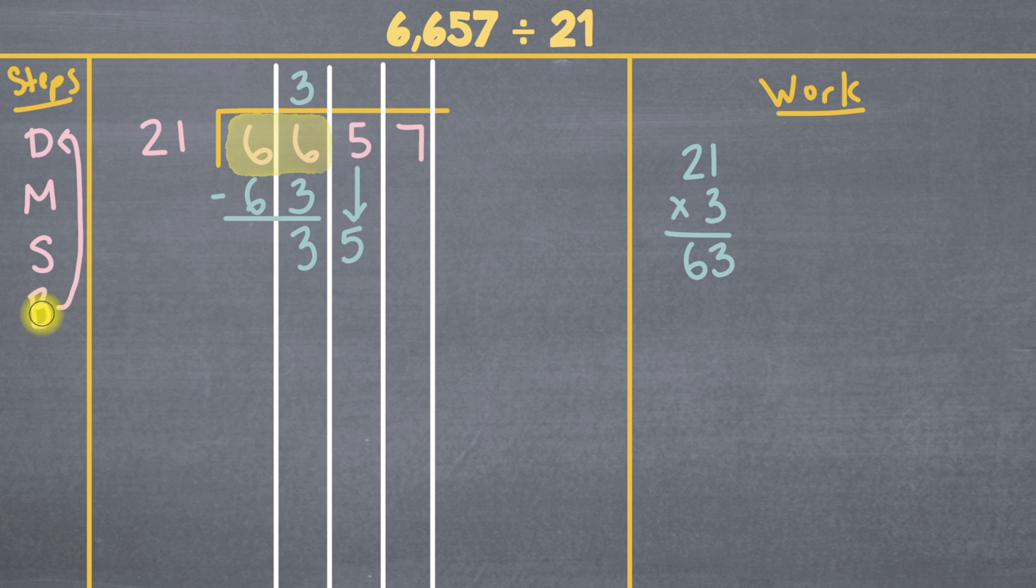So now we'll go back and repeat the process. So now we have to divide again. But what are we dividing? The 3? No. We're dividing the whole thing, 35. And how many times can 21 go into 35 without going over? Well, I think 2 times would be too many. But let's do some work to make sure that's the case.